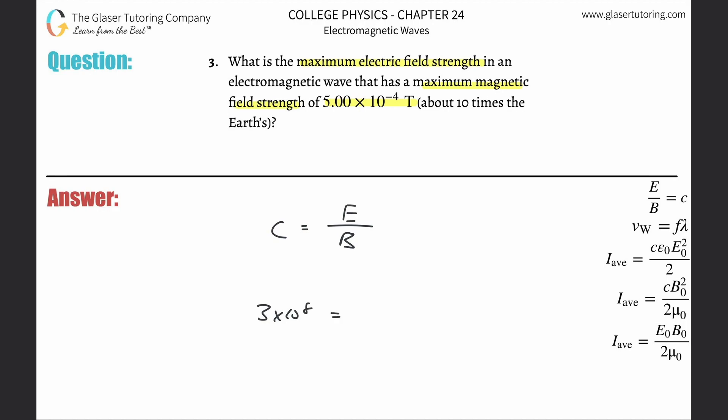So we're finding the electric field strength, and then we are plugging in the magnetic field strength there at the bottom: 5 × 10^-4. Just simply cross multiply here.